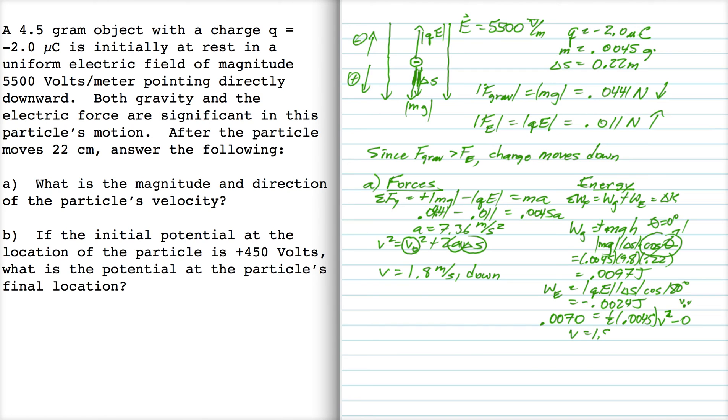And if I solve for V, I get that V is equal to 1.8 meters per second directed down. V is plus or minus 1.8, I choose plus because down is positive in this problem. So I got the same answer for both methods. Thank God.